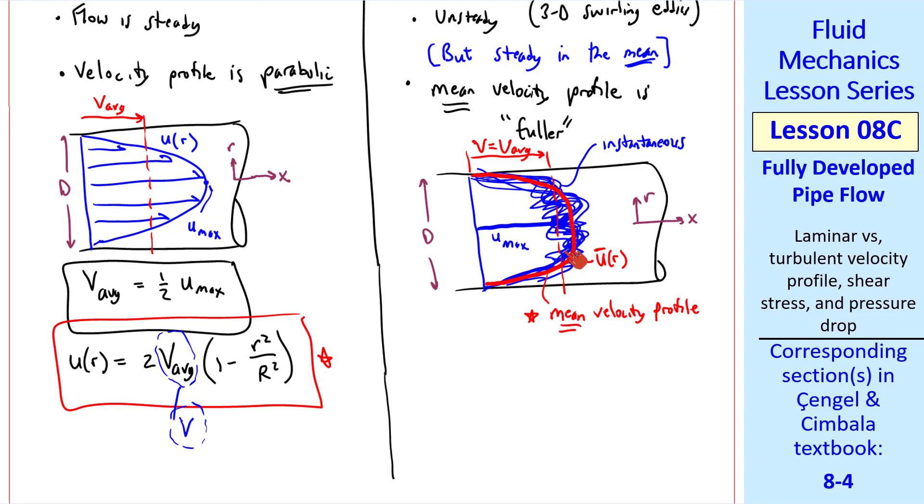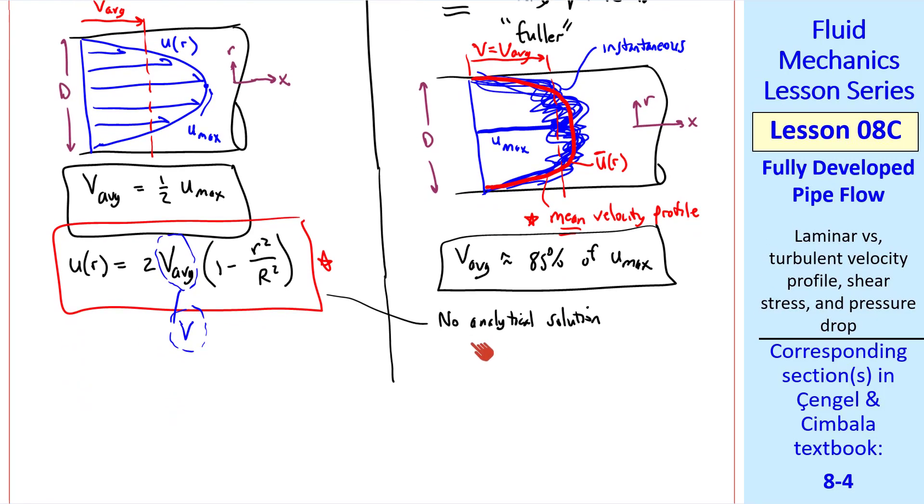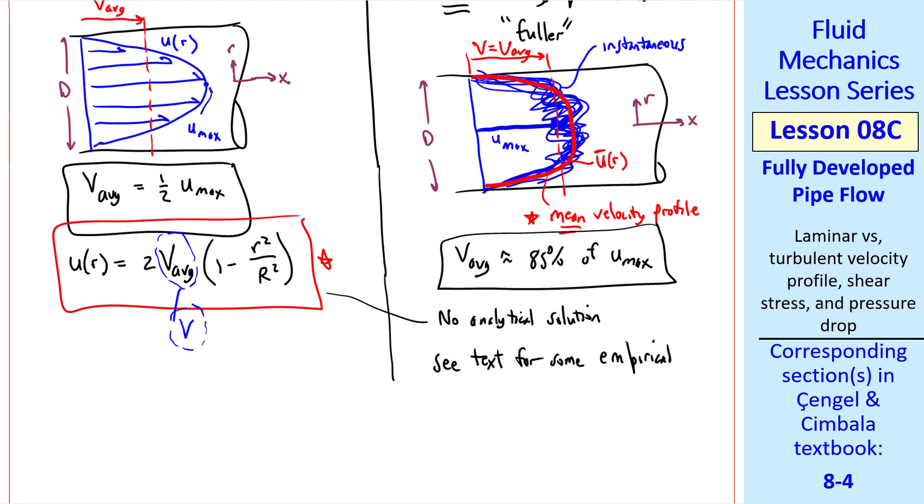U max still occurs at the center line, and we can define v or v average as the average speed through the pipe. When I say the velocity profile is fuller, what that means is it's more like a top hat or one dimensional profile compared to the laminar case, which is parabolic. In other words, it's pretty flat in the middle of the pipe and then very rapidly decays to zero near the wall. Whereas v average was a half u max for laminar flow, v average is about 85% of u max for turbulent flow. And this is a ballpark number. It does depend on Reynolds number. There's no analytical solution for turbulent pipe flow like we had for the laminar case.